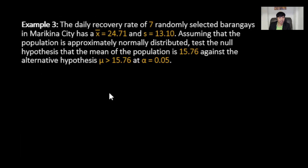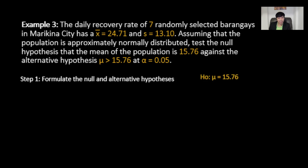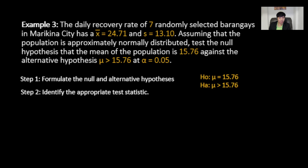For the next example: the daily recovery rate of seven randomly selected barangays in Marikina City has a sample mean of 24.71 and a standard deviation of 13.10. Assuming the population is approximately normally distributed, test the null hypothesis that the population mean is 15.76 against the alternative hypothesis that mu is greater than 15.76, at alpha equals 0.05. Step 1: the null hypothesis is mu equals 15.76, and the alternative hypothesis is mu greater than 15.76. We use a T-test because the sample size is less than 30.